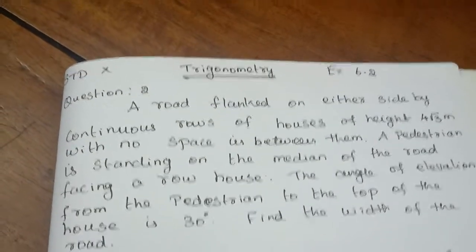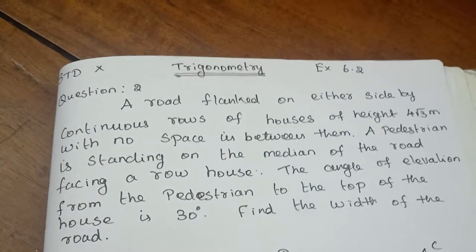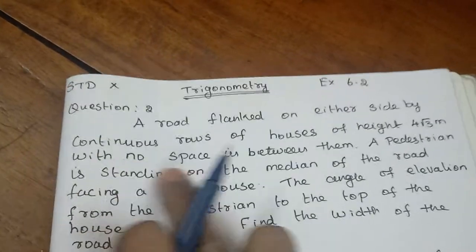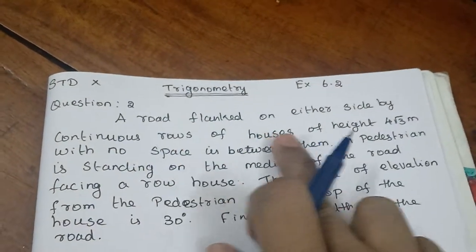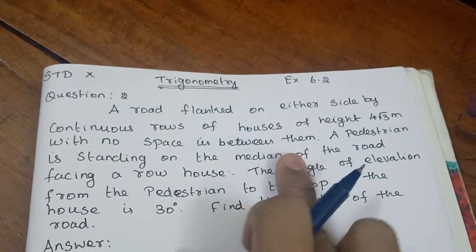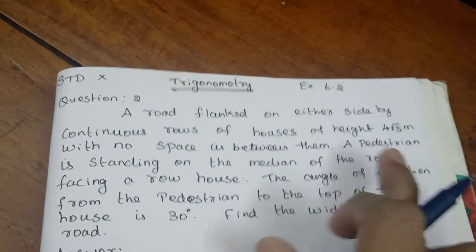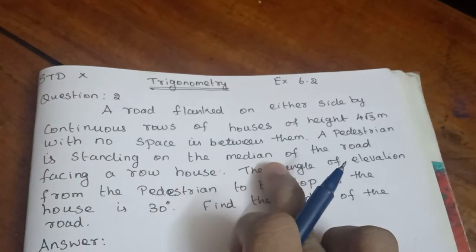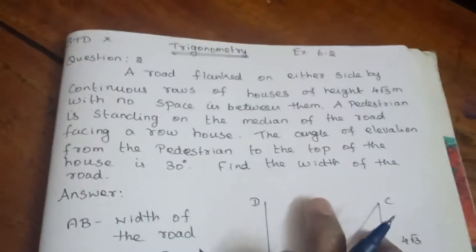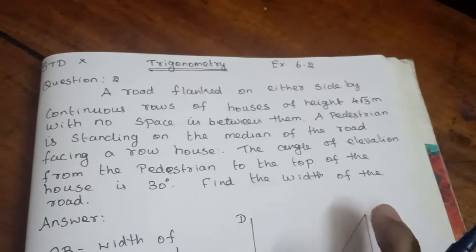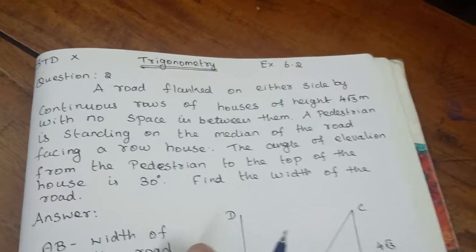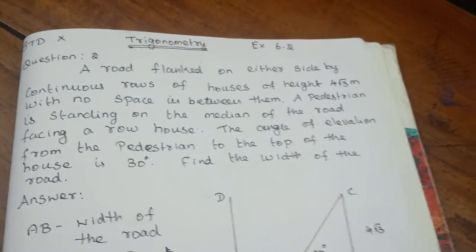Hi viewers. In this video we will do the trigonometry chapter exercise 6.2 last problem. A road flanked on either side by continuous rows of houses of height 4√3 meters with no space in between them. A pedestrian is standing on the median of the road facing a row house. The angle of elevation from the pedestrian to the top of the house is 30 degrees. Find the width of the road.